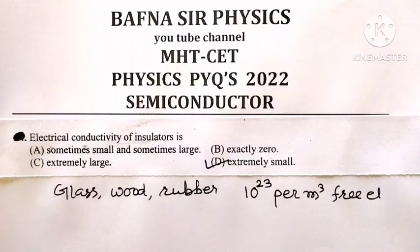Remember, most of you make a mistake by writing that electrical conductivity of insulators is exactly zero. That is not the case. Even though we have insulators like glass, wood, or rubber,